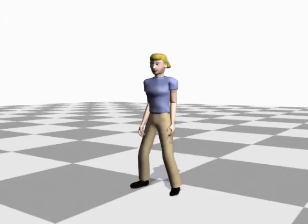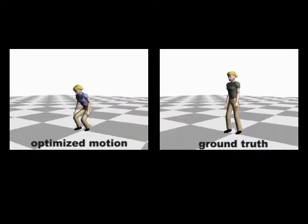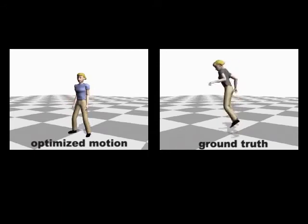The user specifies the start and end poses and the timing for the stance and flight phases. The initial guess is a linear interpolation of the start and end poses. The optimizer then finds a motion that satisfies the user constraints while minimizing energy.